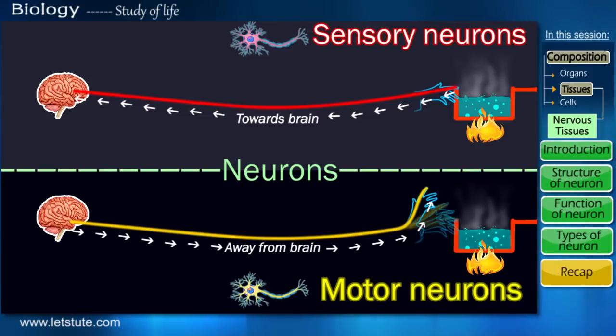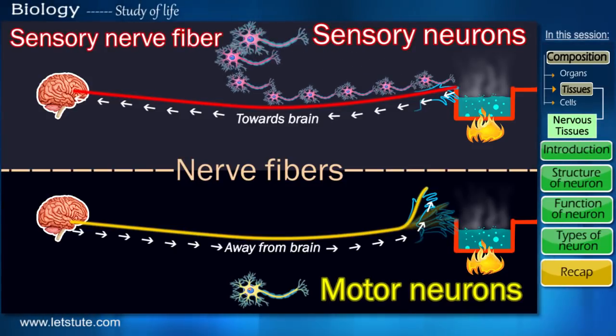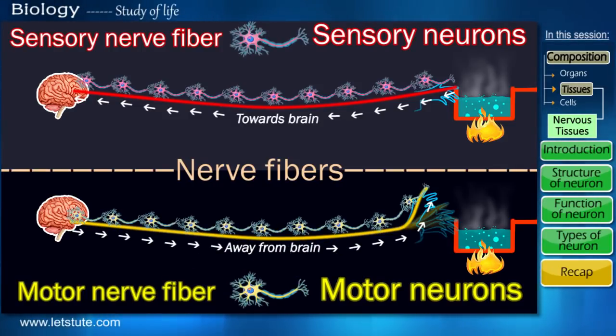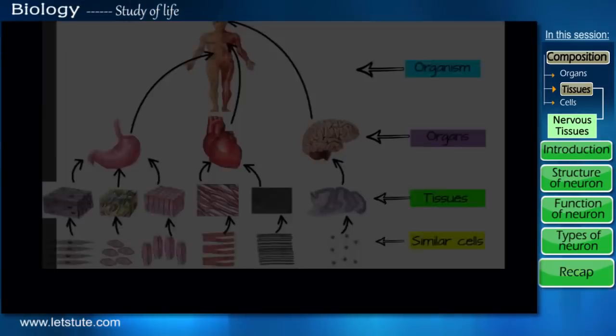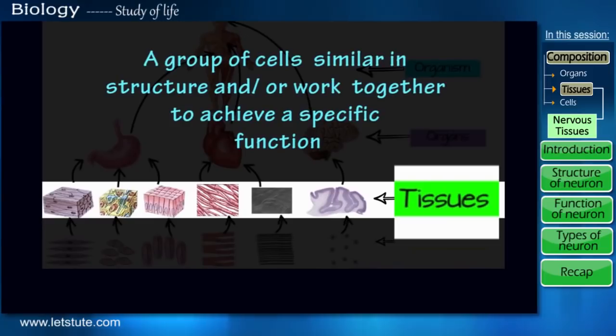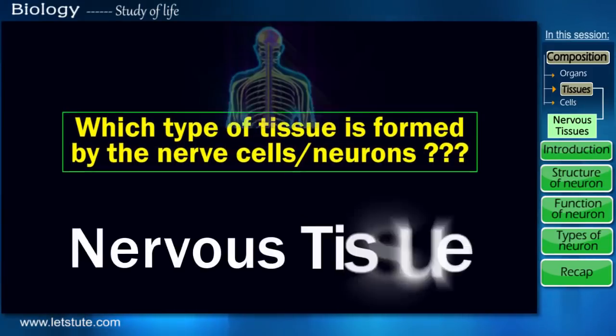And based on the type of neurons, there are two types of nerve fibers. Sensory nerve fiber which is made up of all sensory neurons and a motor nerve fiber which is made up of all motor neurons. So previously we've studied that cells of similar type that come together to perform a specific function is called a tissue. So based on everything that we just discussed, can you guess which type of tissue is formed by these nerve cells? Yes, the nervous tissue.